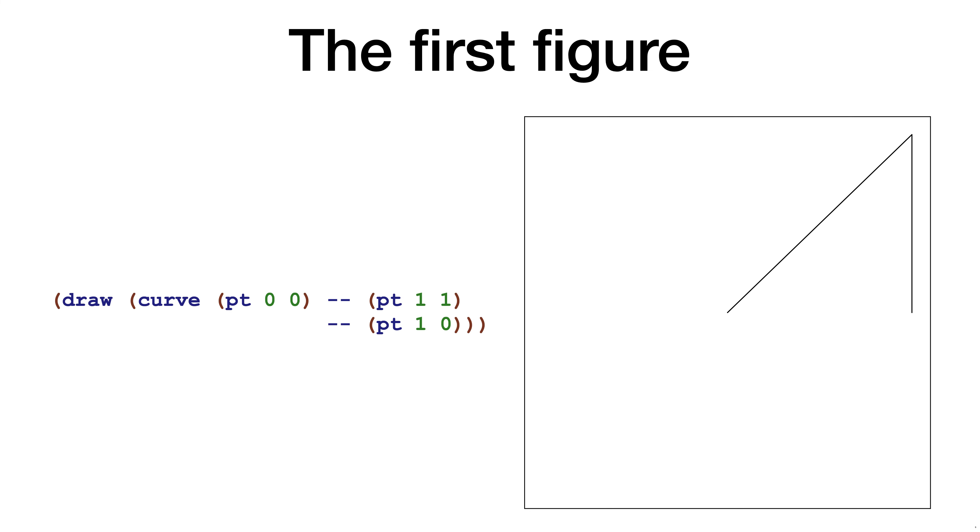We are now going to look at a few code examples. This first example draws a curve from the point 0, 0 to 1, 1 and then continues to 1, 0.